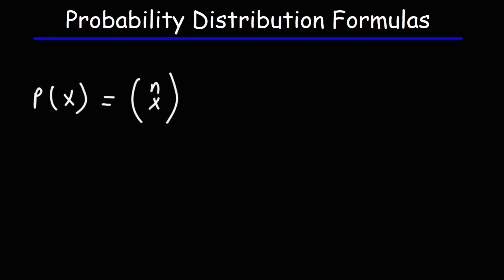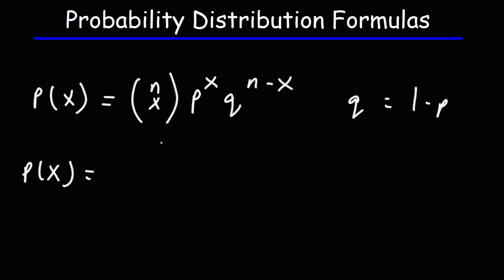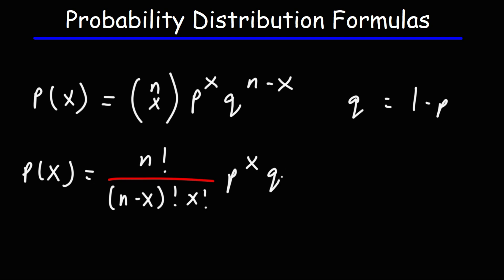The probability of getting x successes in n trials is going to be nCx — that's a combination — times P raised to the x, times Q raised to the n minus x. Now P is the probability of a successful event, Q is the probability that the event will fail. So Q plus P is equal to 1, therefore Q is 1 minus P. You can write this formula like this: it's equal to n factorial over (n minus x) factorial times x factorial, and then times P raised to the x and Q to the n minus x.